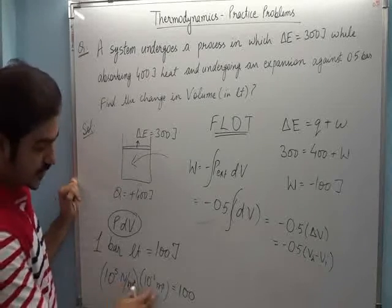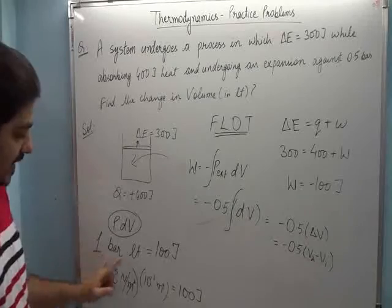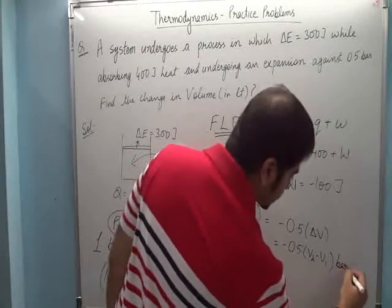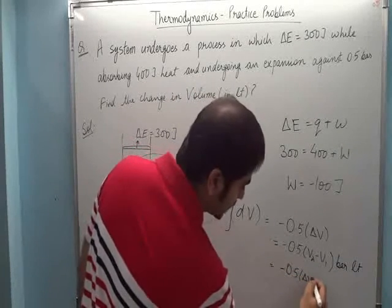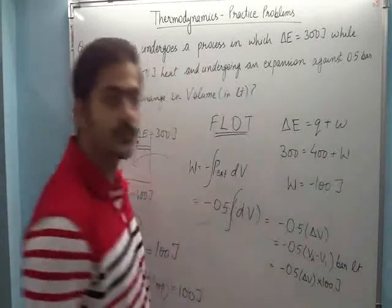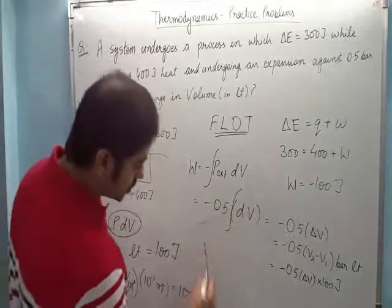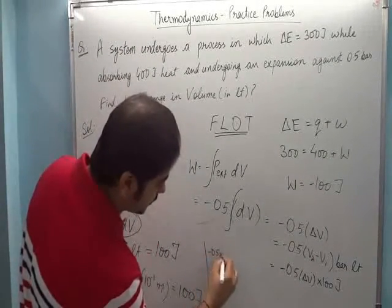So this cancels out. Minus 0.5 into 100 into delta V is equal to minus 100 joules.